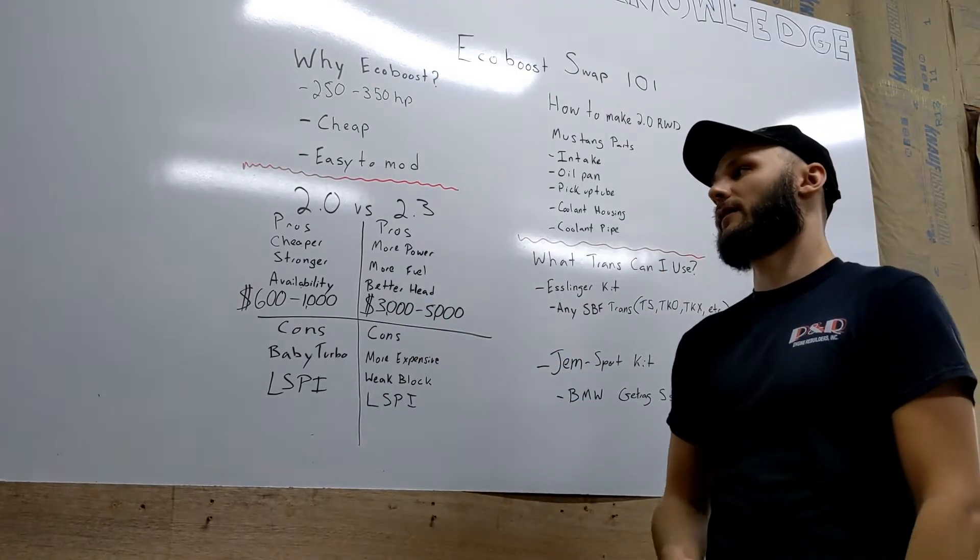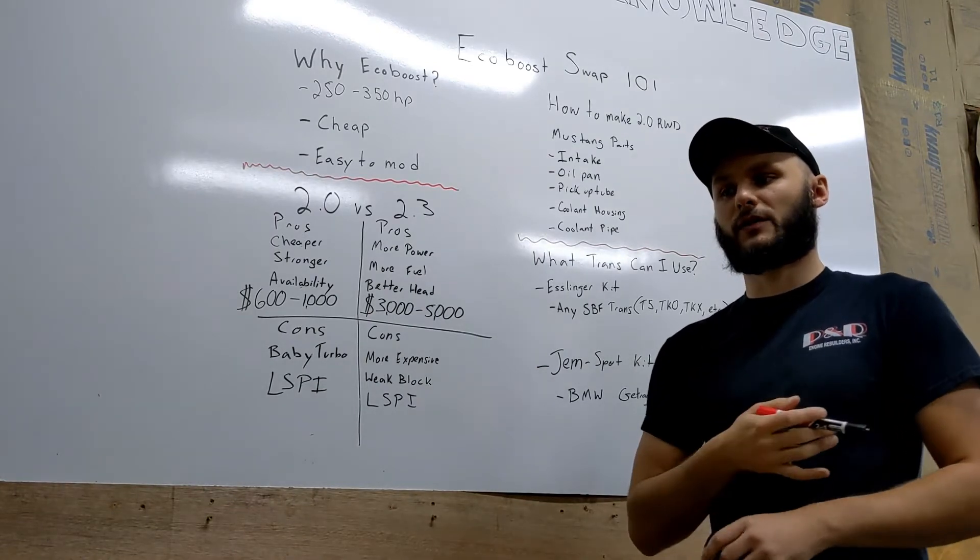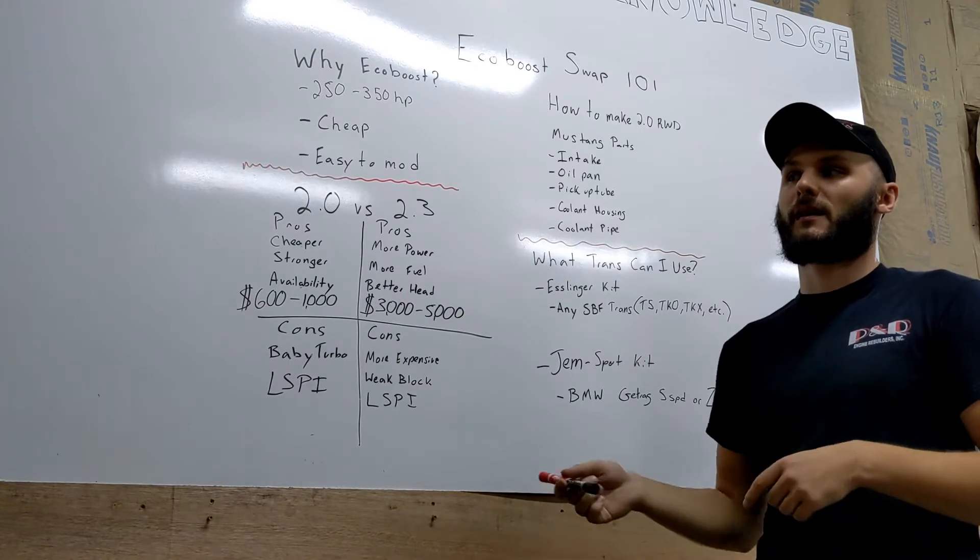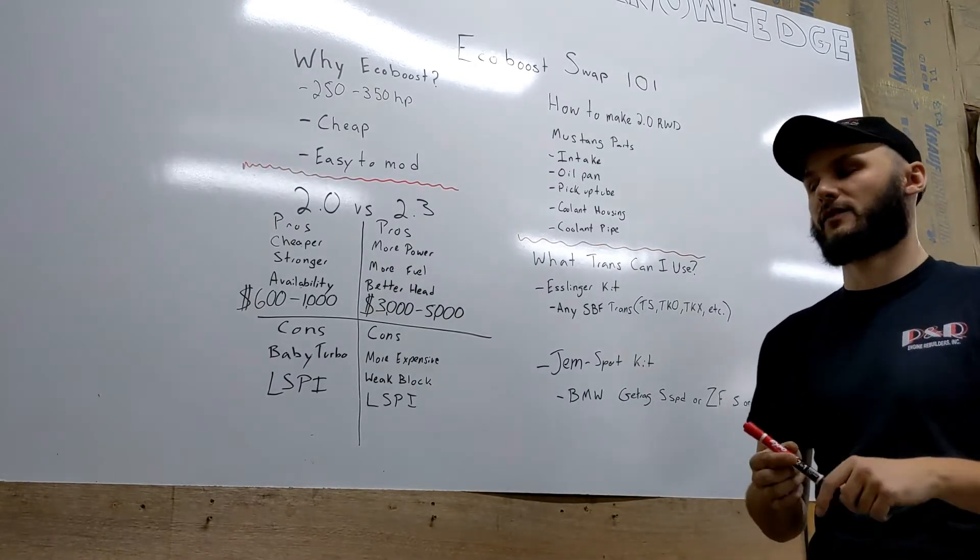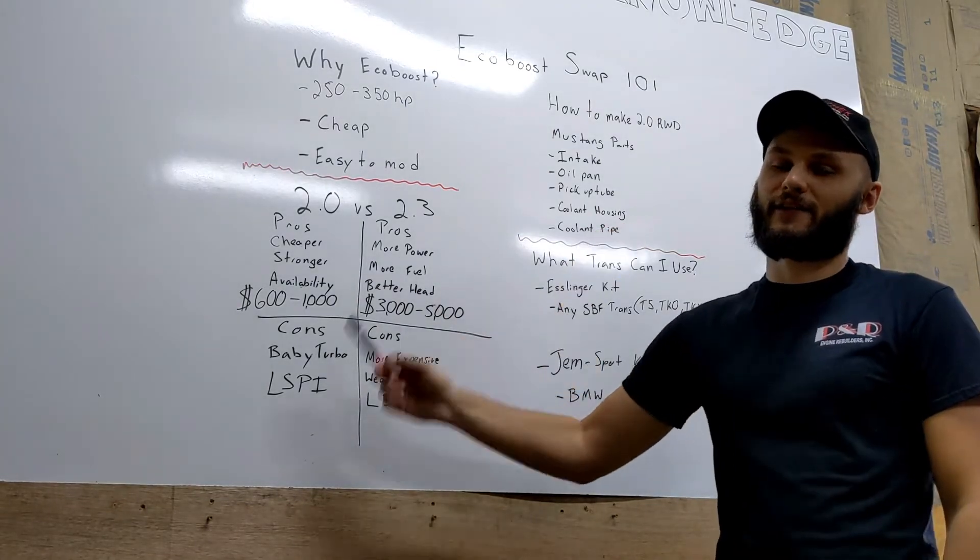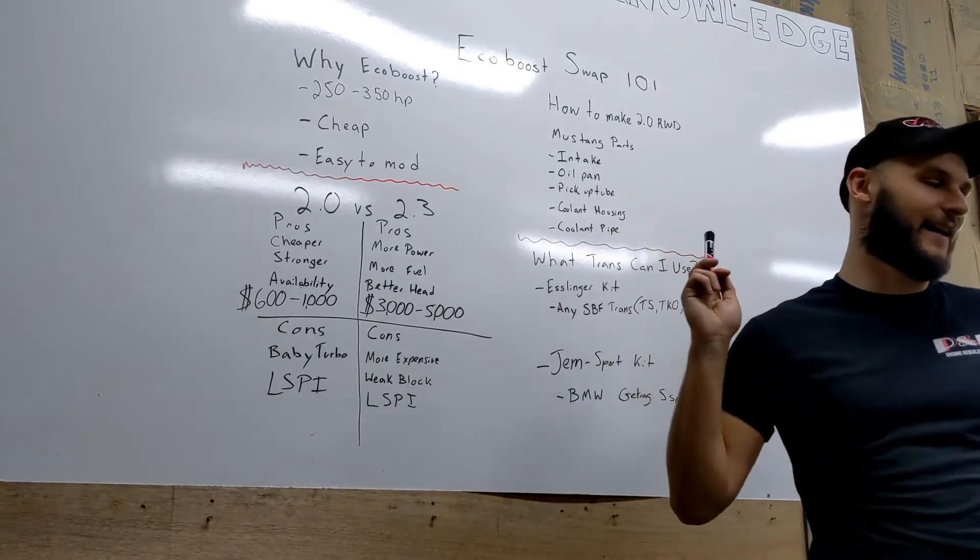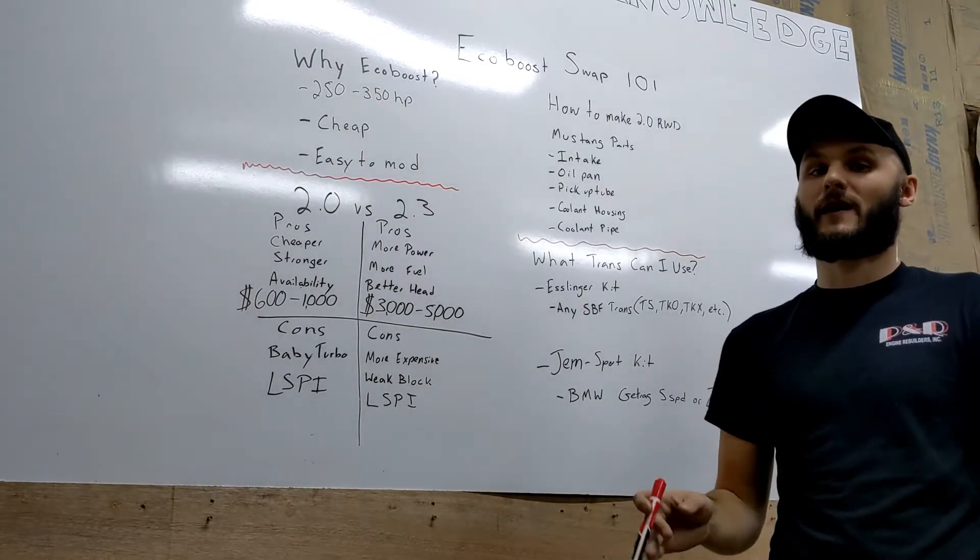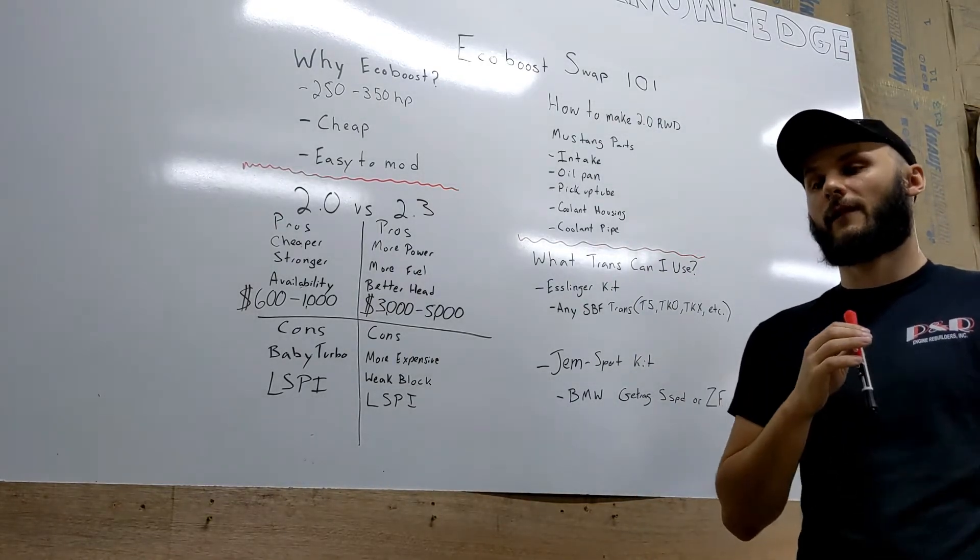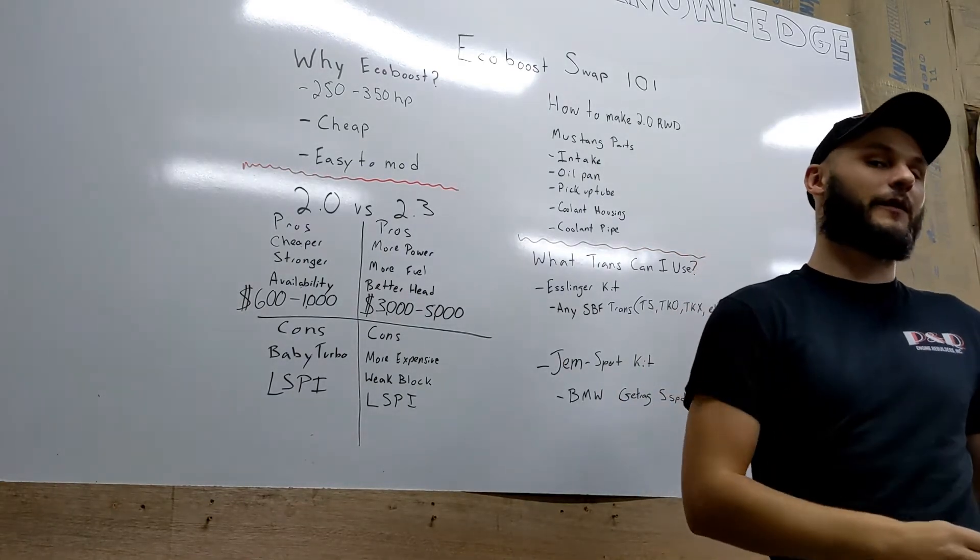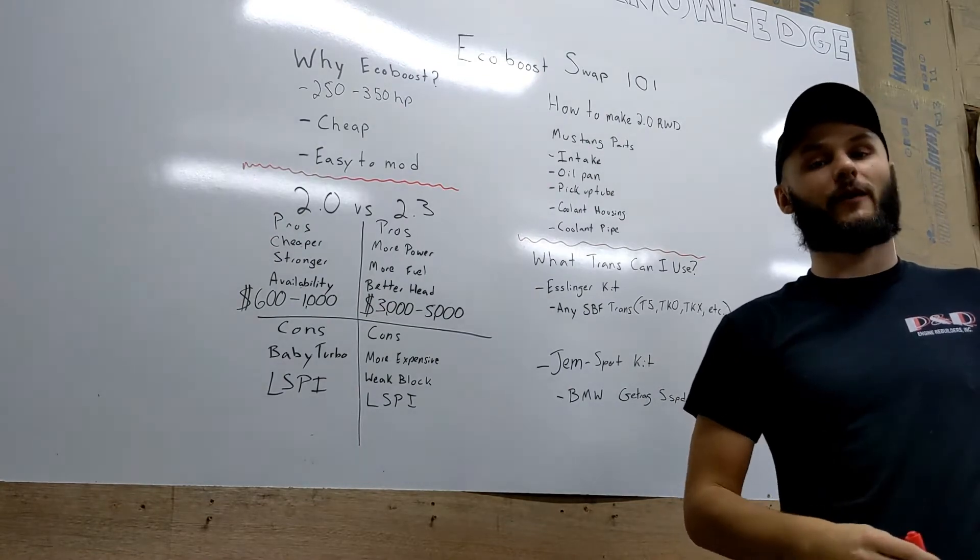The availability - the 2.0, like I said, you can get them from a whole bunch of different cars. The 2.3s, you're kind of stuck with just the Mustang or maybe one or two other applications. I think the Explorers have them as well. Cons of the 2.0: they have a tiny turbo from stock. This thing will not do more than like 280 horsepower with the stock turbo. It's just too small. If you try to push past that power limit, you're just making this turbo into a heat pump and not making any more power.